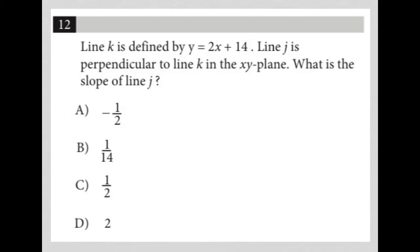This question says line K is defined by y equals 2x plus 14. Anytime I see a line with an equation, I immediately think y equals mx plus b, which is the slope-intercept form. This tells me that line K has a slope m of 2 and a y-intercept b of 14.